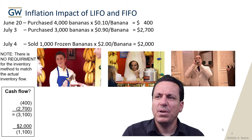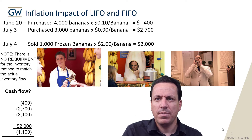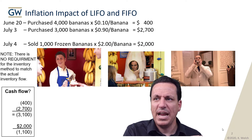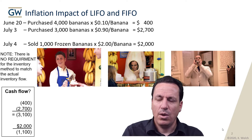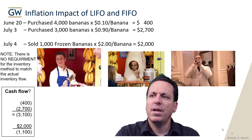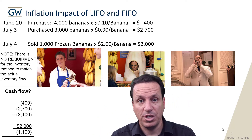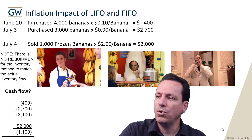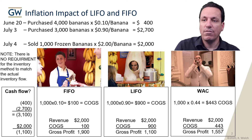Here's our example. This is a period of inclining prices where inflation is happening. We purchased bananas — first for 10 cents, then the price went up to 90 cents — and we sold them for $2 on the market. The three inventory management assumptions we used are FIFO, LIFO, and weighted average cost.